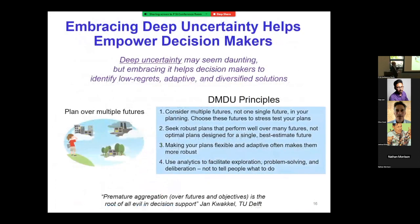My colleague Jan Fogel at TU Delft is grateful for 'premature aggregation over futures and objectives — it's the root of all evil in decision support.' On a cube framework with three dimensions — uncertainty characterization, decision space richness, and system complexity — the sparser the decision space and the more well-characterized the uncertainty, the more you just get the best estimate probability distribution and act. The richer the decision space and the deeper the uncertainty, the more there's potential payoff to looking really hard for robust options.